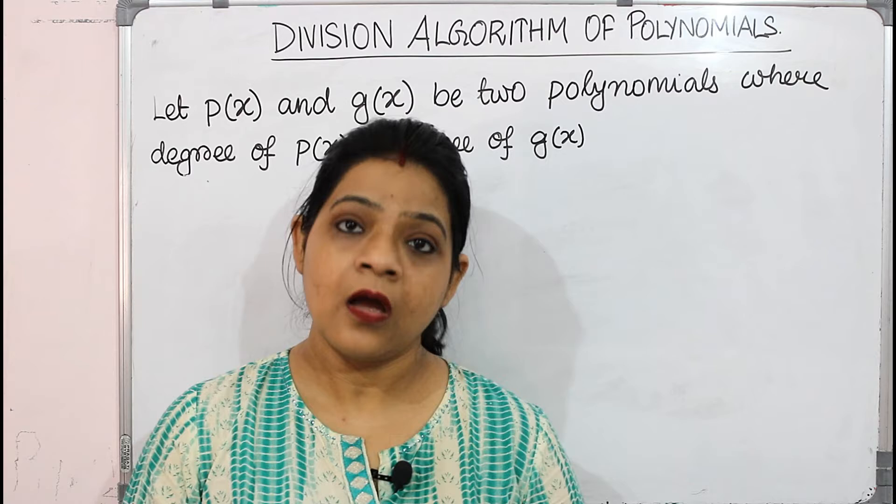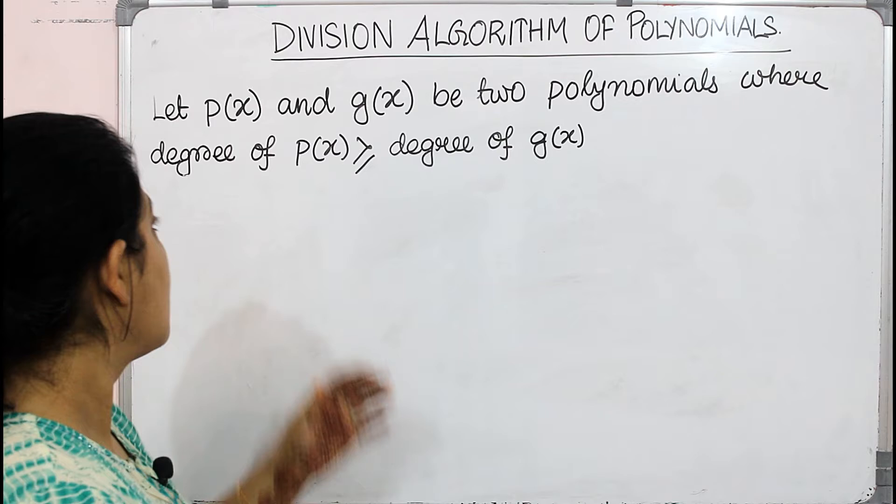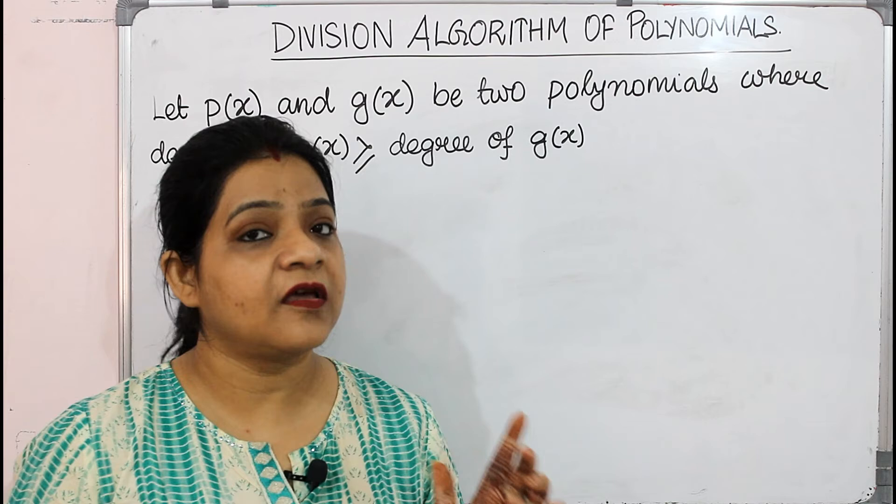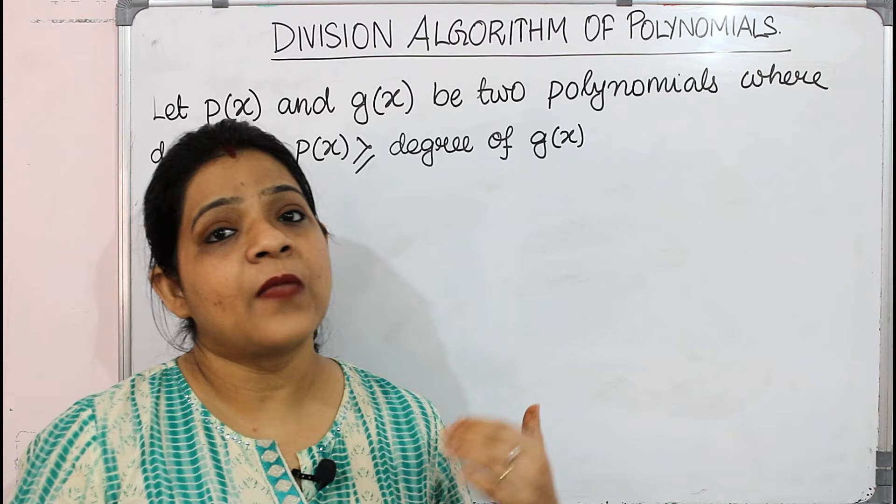Let P(x) and G(x) be two polynomials where the degree of P(x) is greater than or equal to that of G(x). The degree of P(x) means the highest positive integer exponent of P(x), and it should be greater than the highest positive integer exponent of G(x).